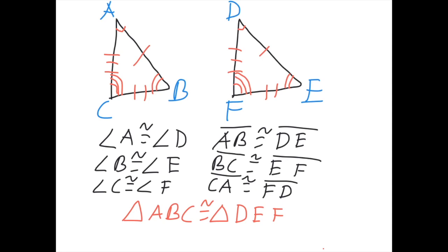If you named triangle ABC something else, that's fine, but if you change that order, you have to change this order. A has to be in the same spot as angle D, B has to be in the same spot as angle E, and C has to be in the same spot as F. So, if you said CBA, you would have to then say FED. As long as they're in the same spots it's fine, but order does matter.